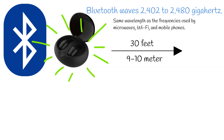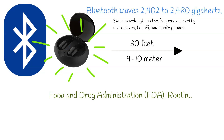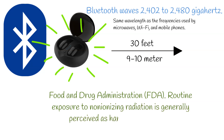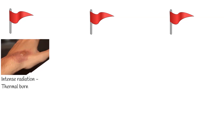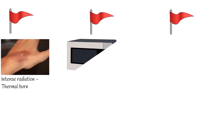Exposure to low amounts of this type of radiation is not harmful to humans. According to the Food and Drug Administration (FDA), routine exposure to non-ionizing radiation is generally perceived as harmless to humans. But that is not the whole story — there are some additional questions and red flags we should consider. The CDC states that non-ionizing radiation is only dangerous when a person comes into intense, direct contact with it.